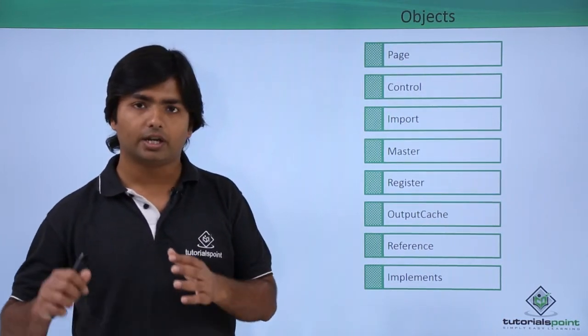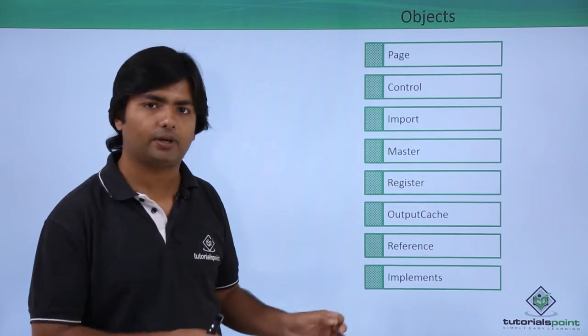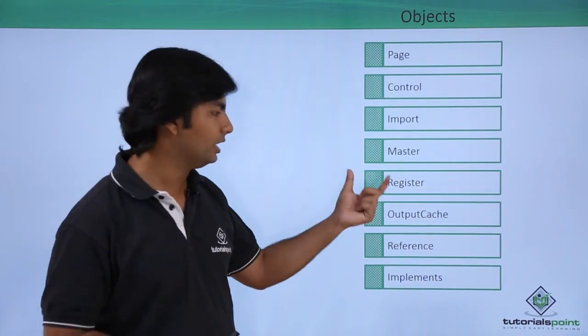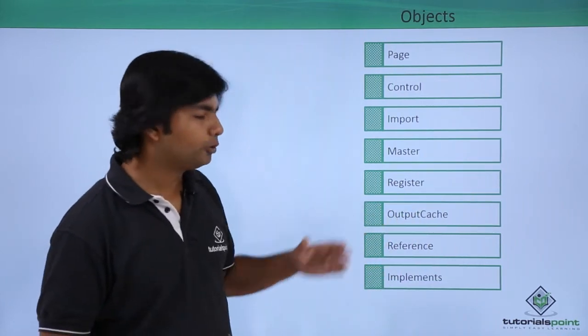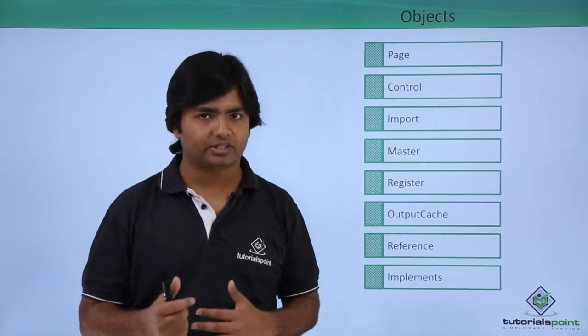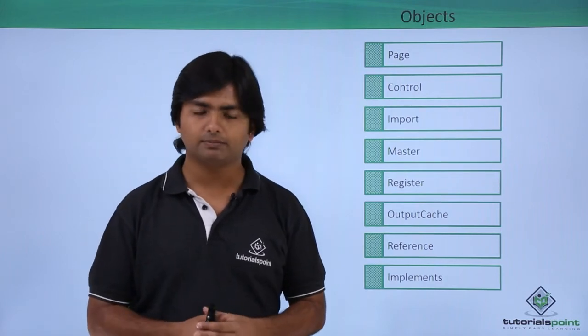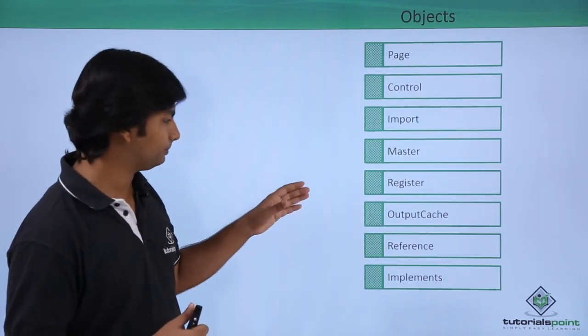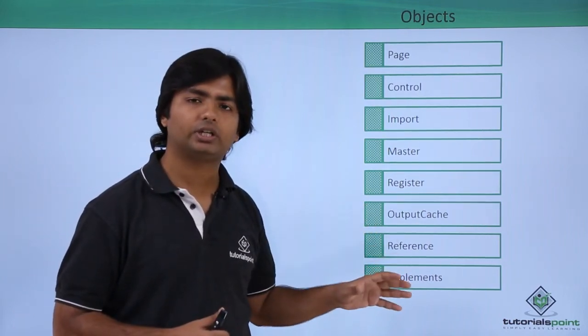Similarly, register: whenever you use some third-party tools like Ajax control or Telerik control and if you add them in the web page, then to register those controls for a web page you will get the register directive. OutputCache is done for the caching thing, which we will cover during this curriculum. This OutputCache will be used for caching when you want to do that on the page level.